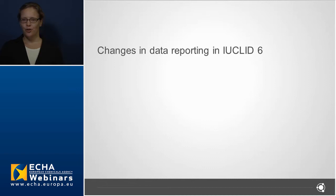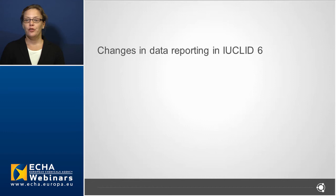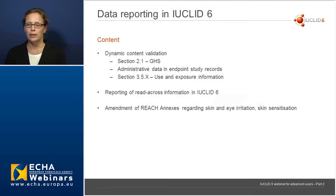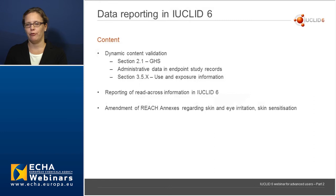Good morning everybody. My name is Anika Malkia and I'm going to talk about some of the changes in data reporting between IUCLID 6 and IUCLID 5, based on topics from helpdesk questions we received. We'll be looking at mainly three topics: dynamic content validations with examples from sections 2.1, administrative data and endpoint study records, and use and exposure information in section 3.5. We'll also look at reporting of read-across information in IUCLID 6, and the impact of the amendment of the REACH annexes regarding skin and eye irritation and skin sensitization.